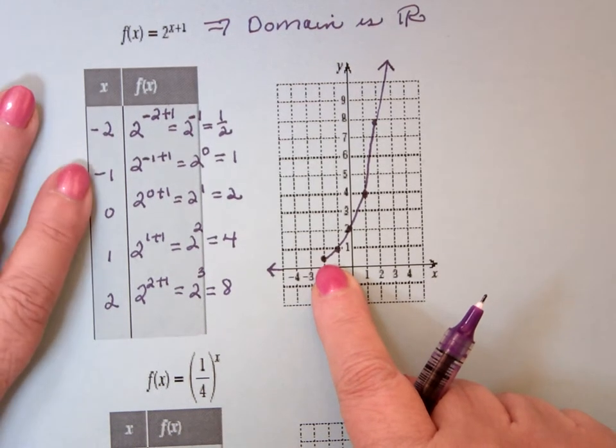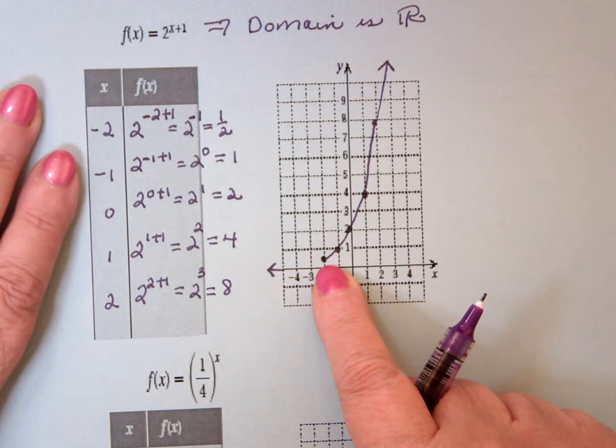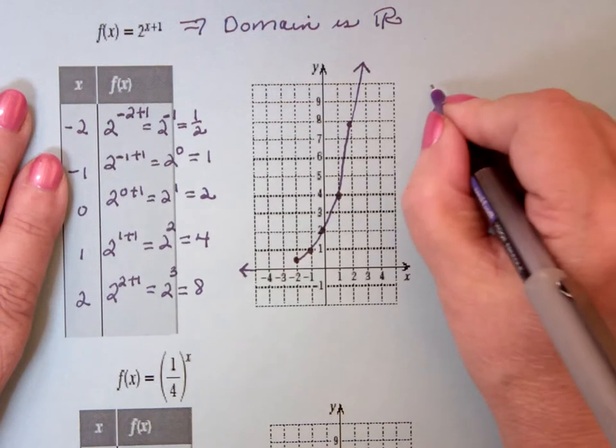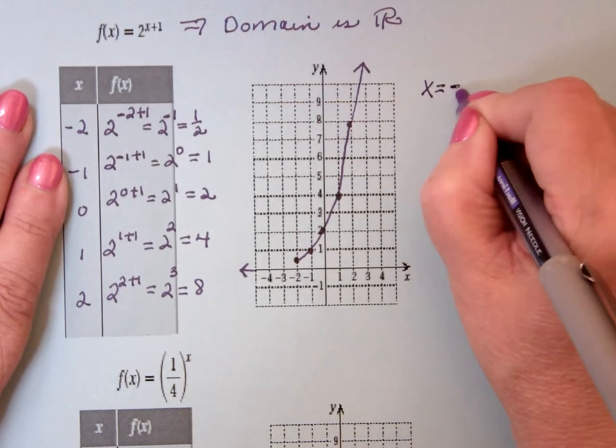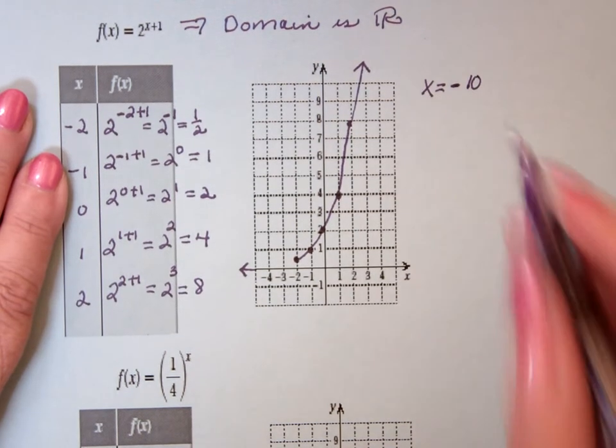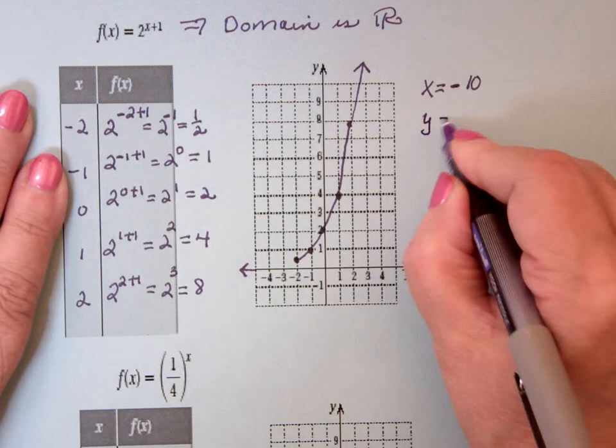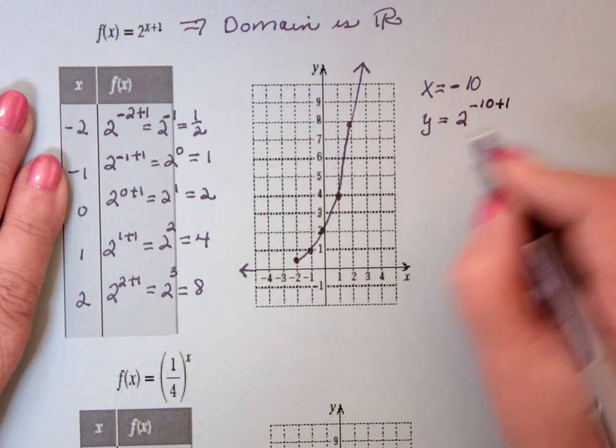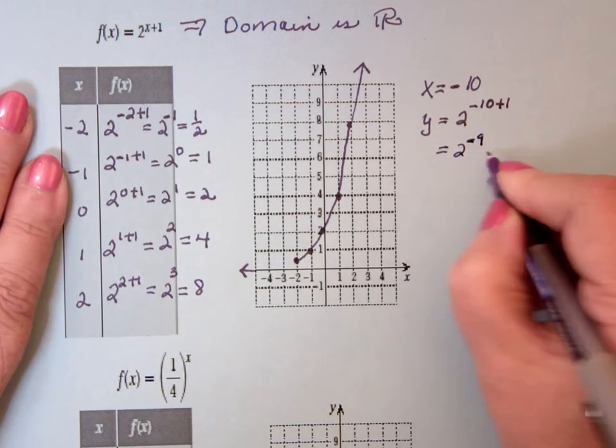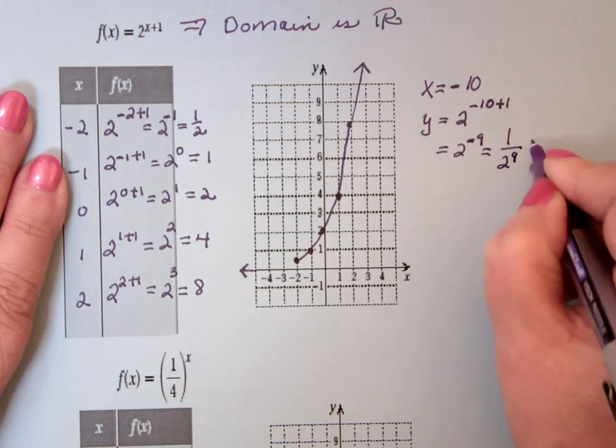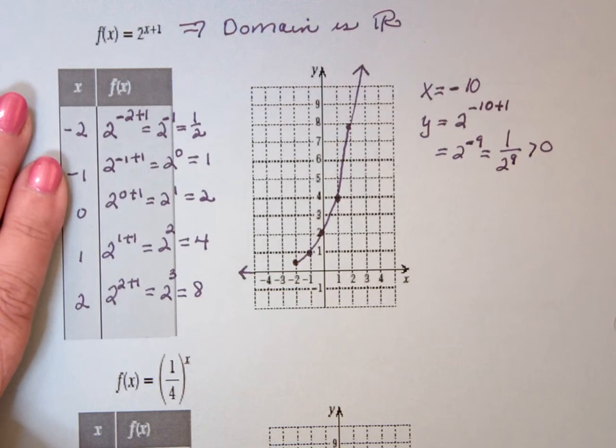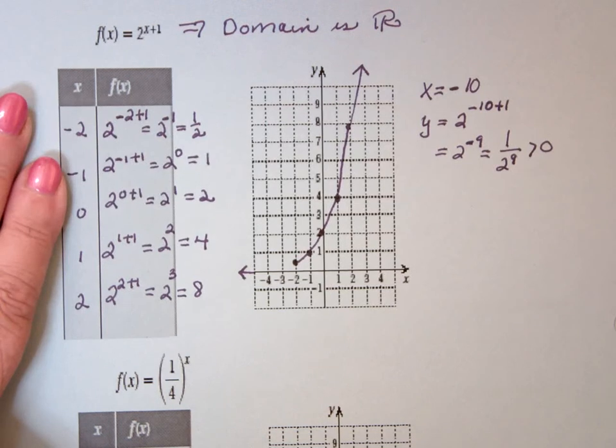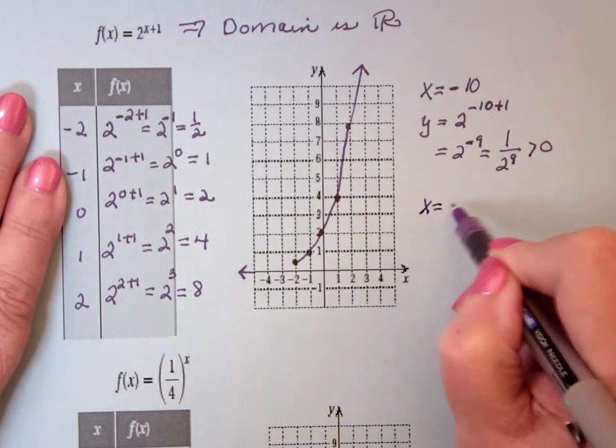Now, here's the thing. No matter what I put in for x, no matter how negative x gets, y is going to be a positive number. So, for example, suppose what I had was if x equals negative 10, then essentially y would be equal to 2 to the negative 10 plus 1, which is 2 to the negative 9. This is 1 over 2 to the 9th. That's a positive number.